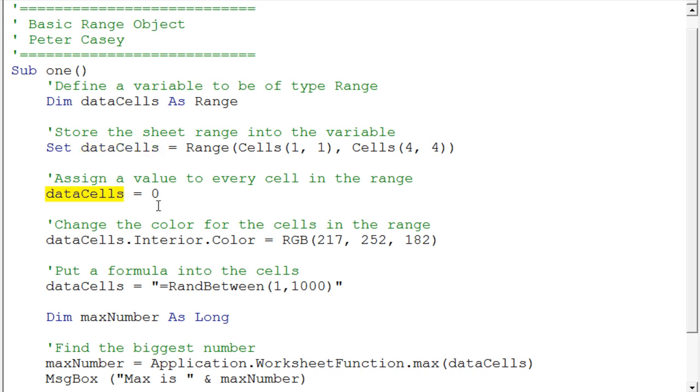Now this is kind of an interesting idea because think about it, we have 16 cells stored inside that range object called data cells. So when I say data cells is set equal to 0, well again you have to remember that that's 16 cells, that's a range of cells. So it's going to put that 0 into every cell in that range. So that's kind of cool.